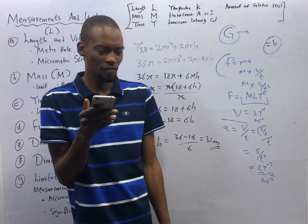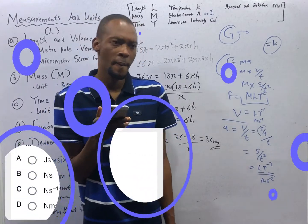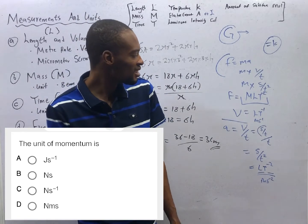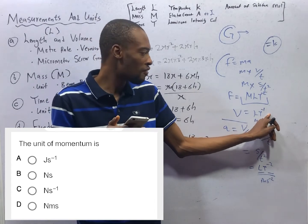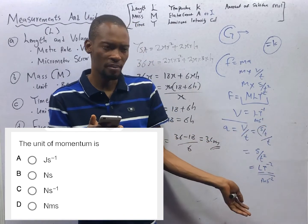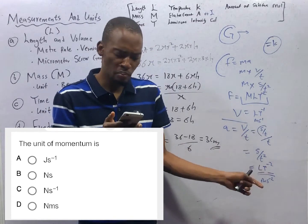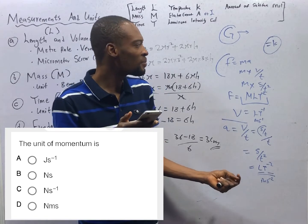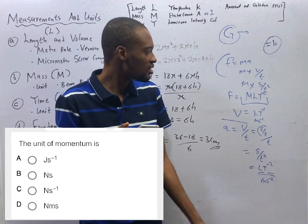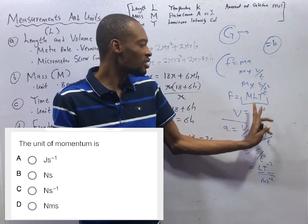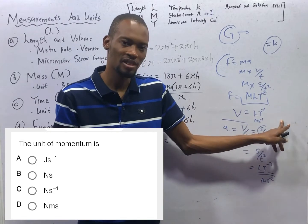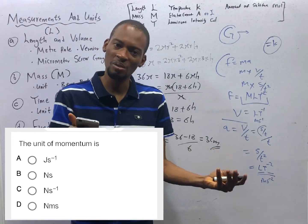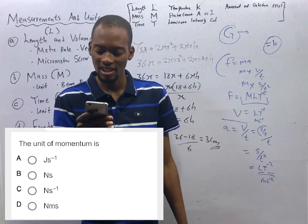The unit of momentum is dashed. Momentum is mass times velocity. Velocity is Lt raised to the power of 1. Mass is kilogram. Therefore, kilogram meter per second is the unit of momentum. And kilogram meter per second is the same thing as Newton seconds. Newton is kilogram meter per second square. Kilogram meter per second square times second. That will give you kilogram meter per second. Which means kilogram meter per second is the same thing as Newton times second. Option B is the correct option.